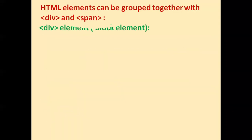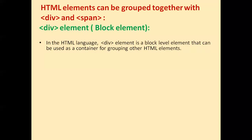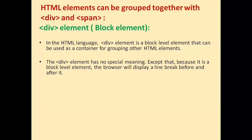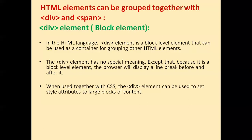The div element is a block level element, so it generally gives a line break before and after the div tag. In HTML, the div element is a block level element that can be used as a container for grouping other HTML elements. Div has the capability of grouping multiple elements within it. The div element also has no special meaning except that, being a block level element, the browser will display a line break before and after it, and it can be used with CSS to apply style attributes to large blocks of elements.